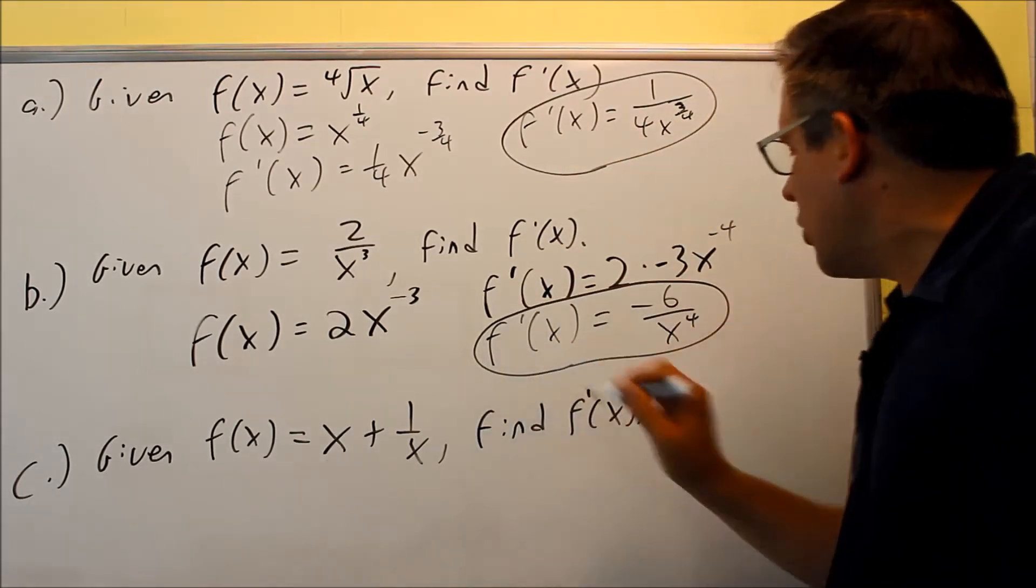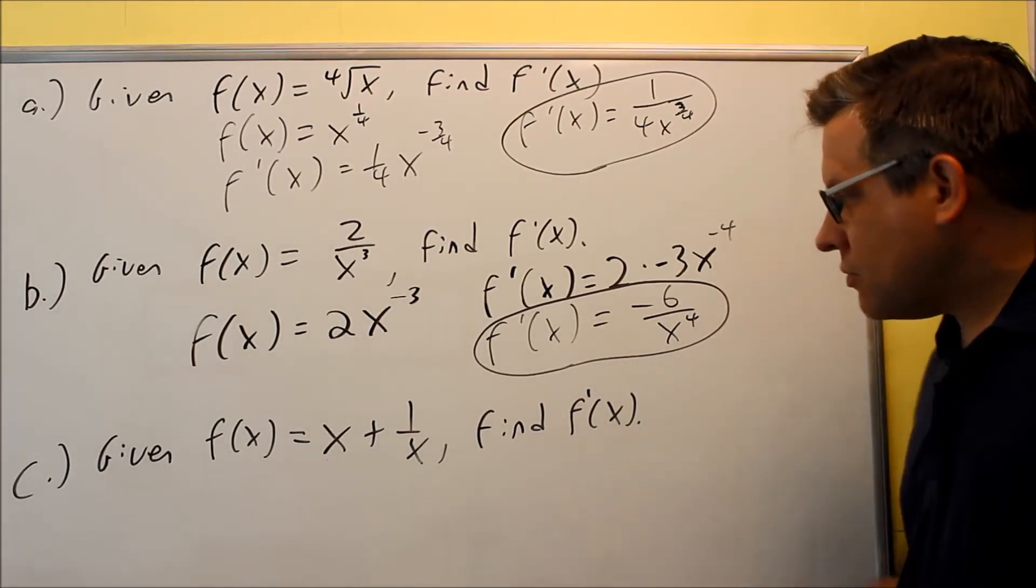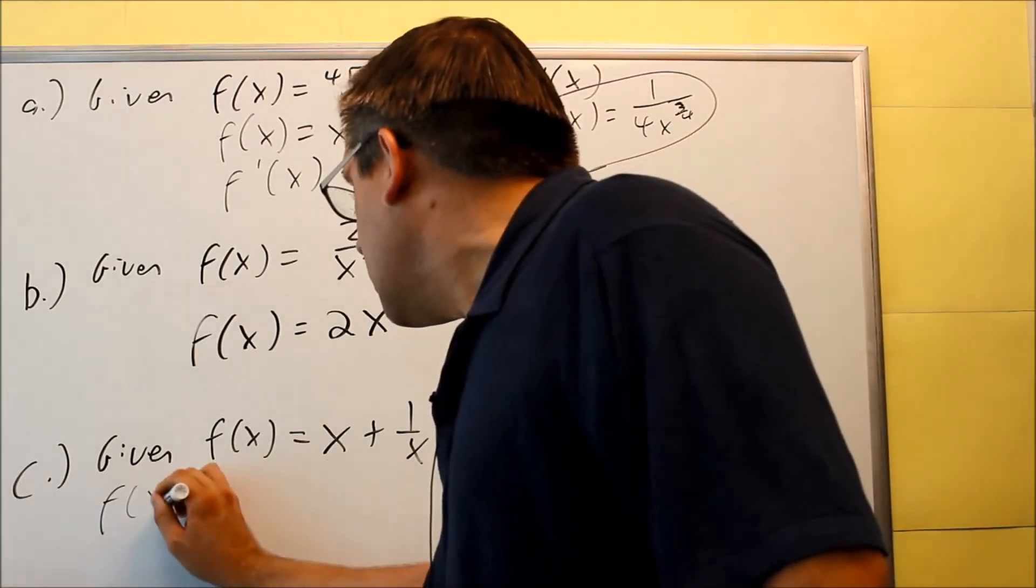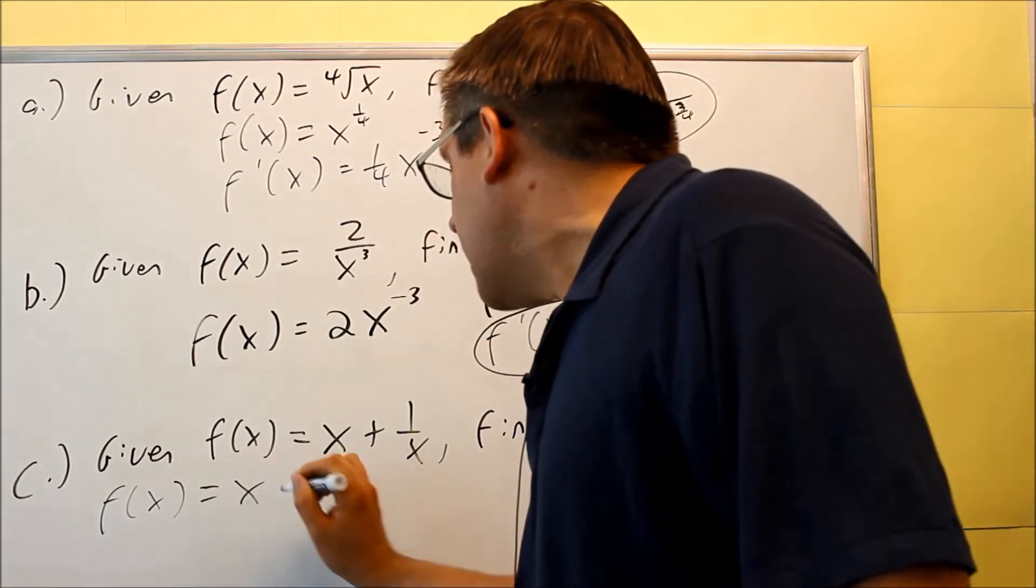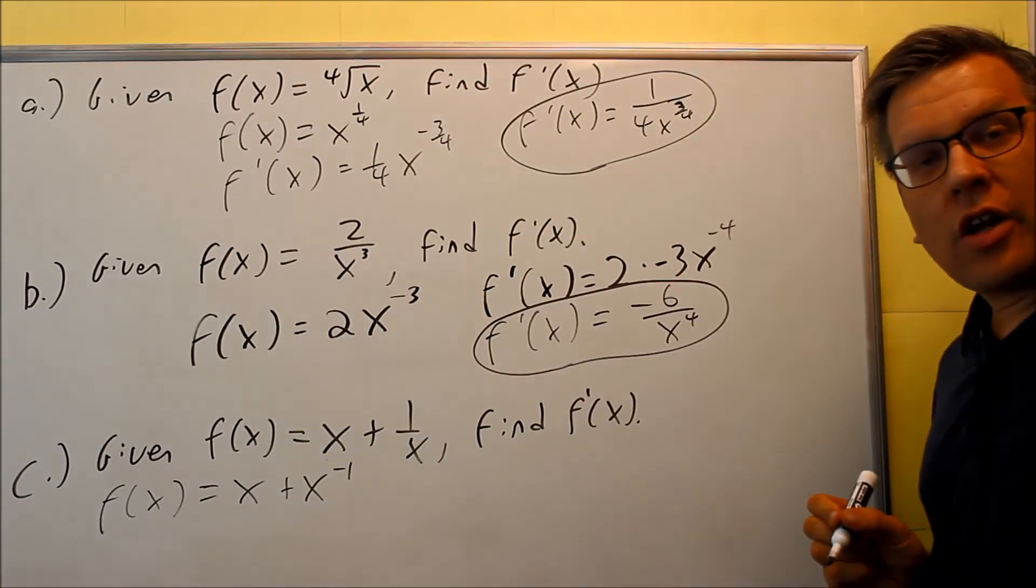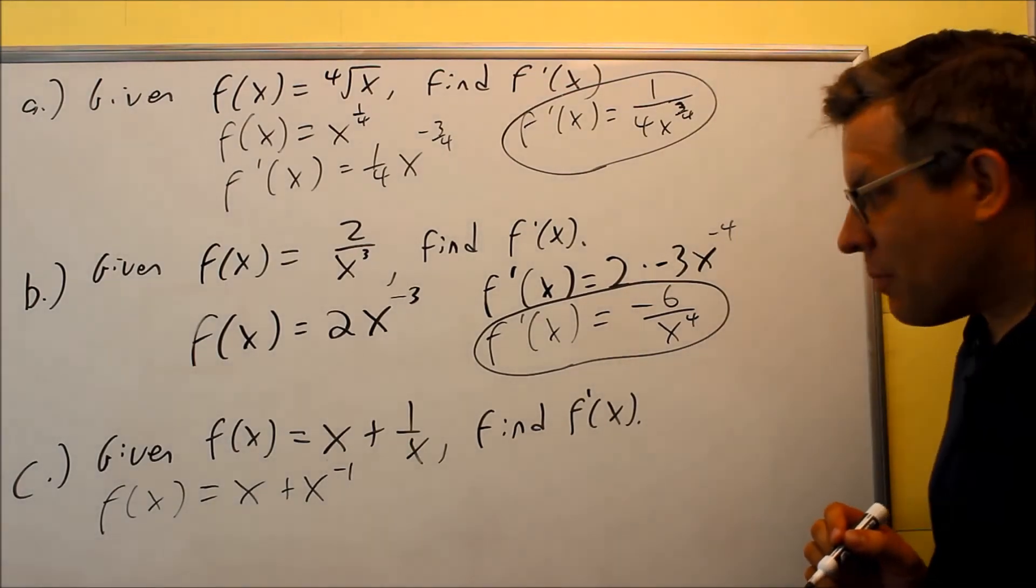The answer for this one is negative 6 over x to the 4th. The last one, we're first going to change this into negative power, x plus x to the negative 1. So I'll do that as my first step. I'll apply the power rule to each of those separately.